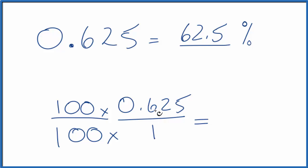Now we get 100 times 0.625, that's 62.5, and we have a hundred on the bottom. Remember percent is the part per hundred, so we have 62.5% just like we found before.